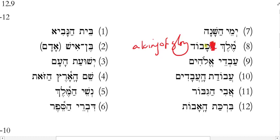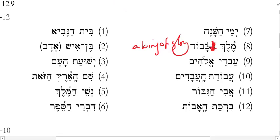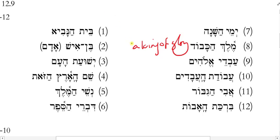In English, even though the article is on the Hebrew noun, I'm not going to translate it as 'the King of the Glory,' because putting 'the' in front of an abstract noun like this just isn't good English. Like 'the Lord of Love' — I wouldn't say 'the Lord of the Love' in English.